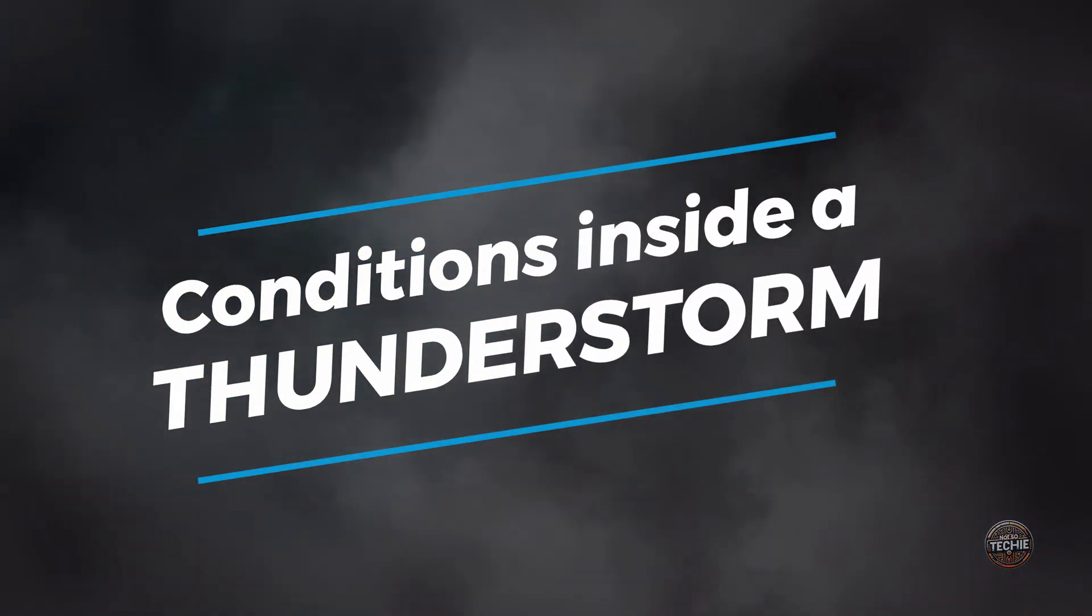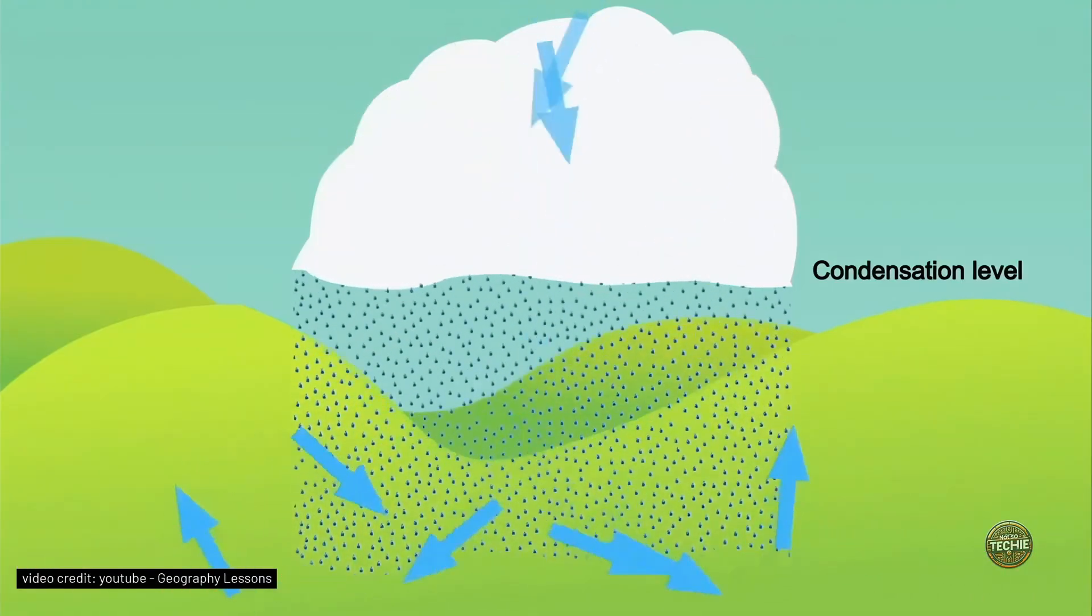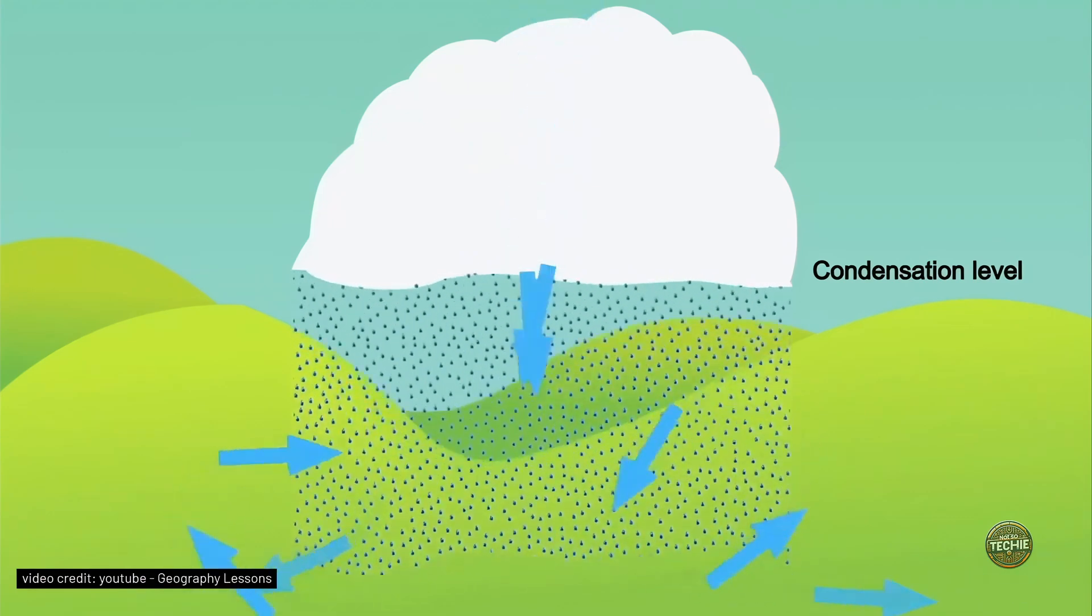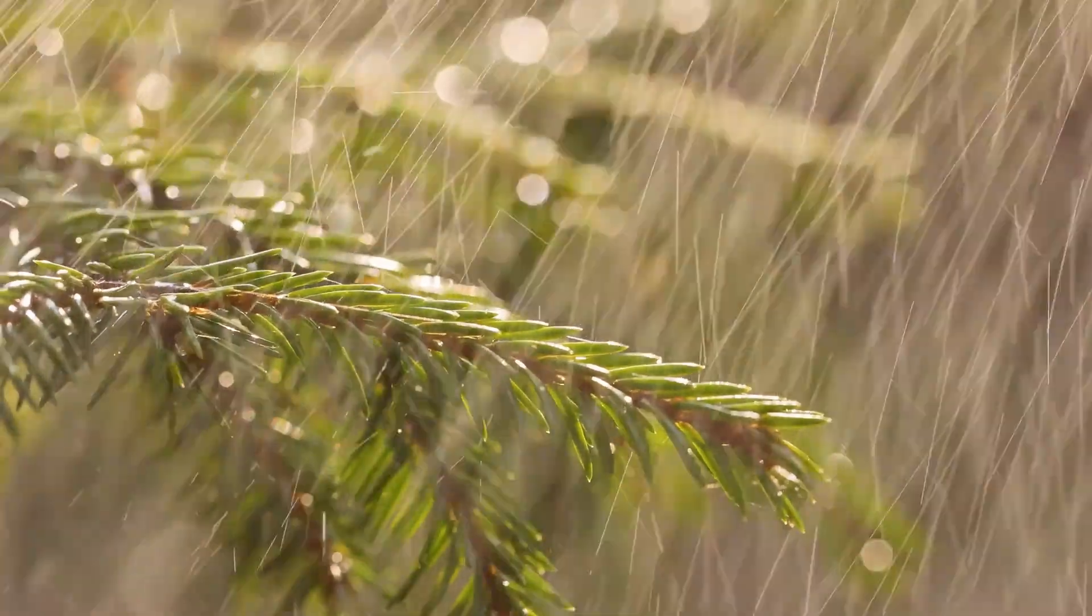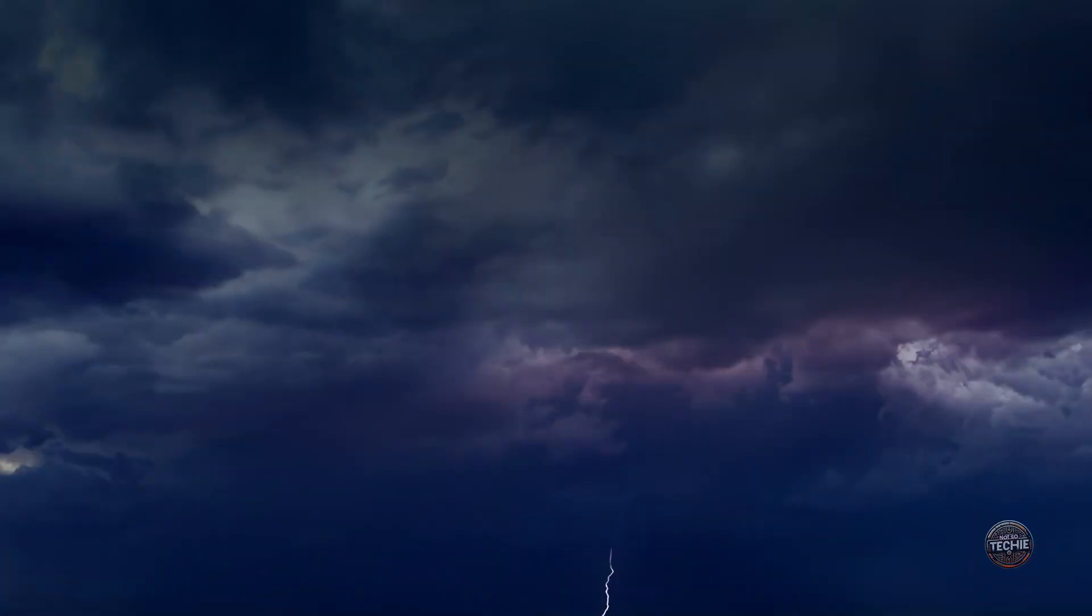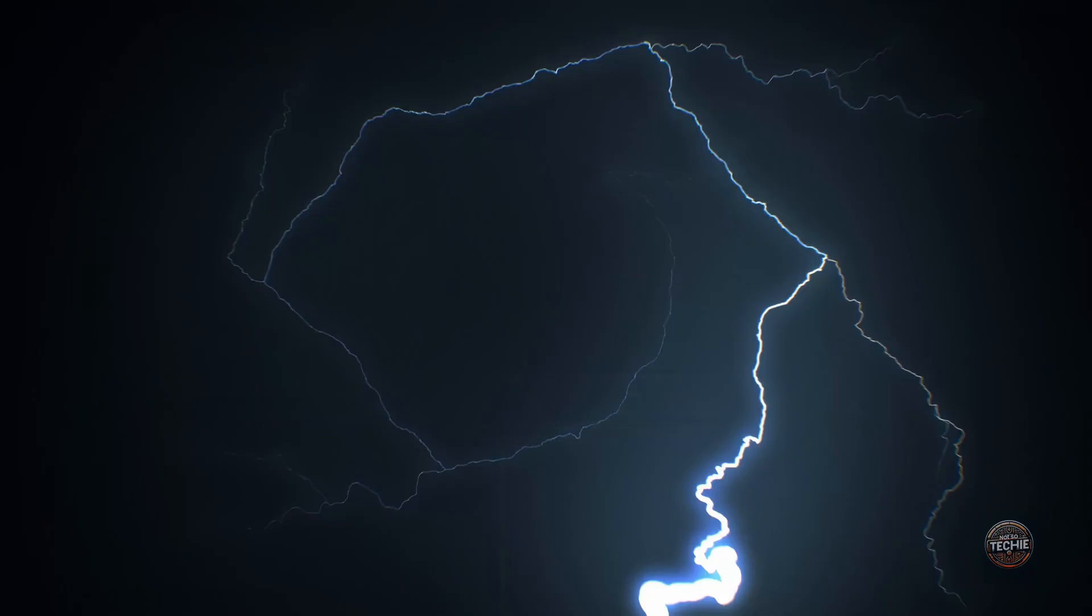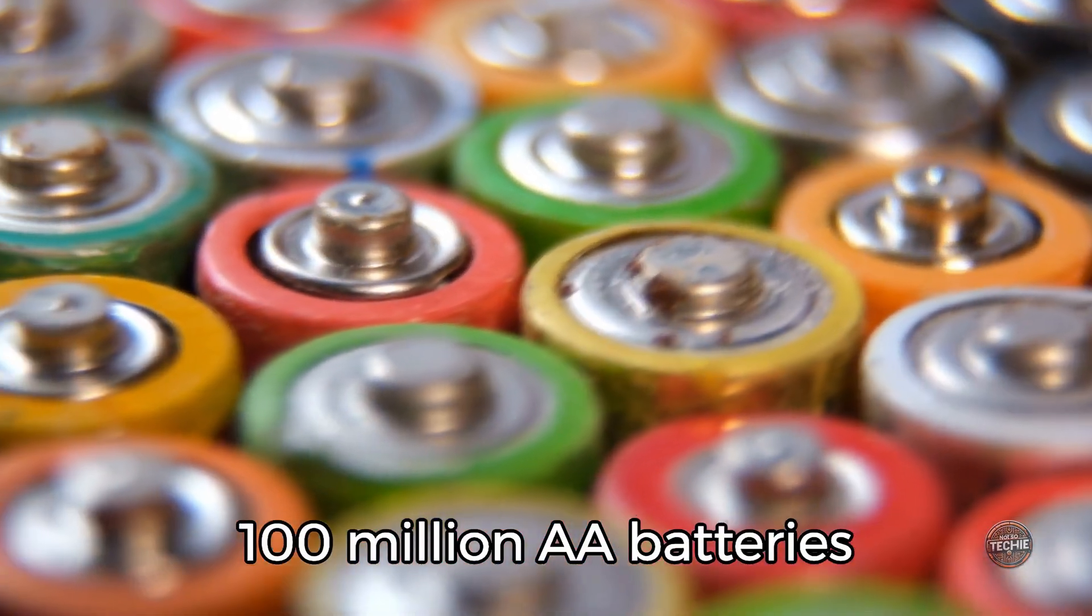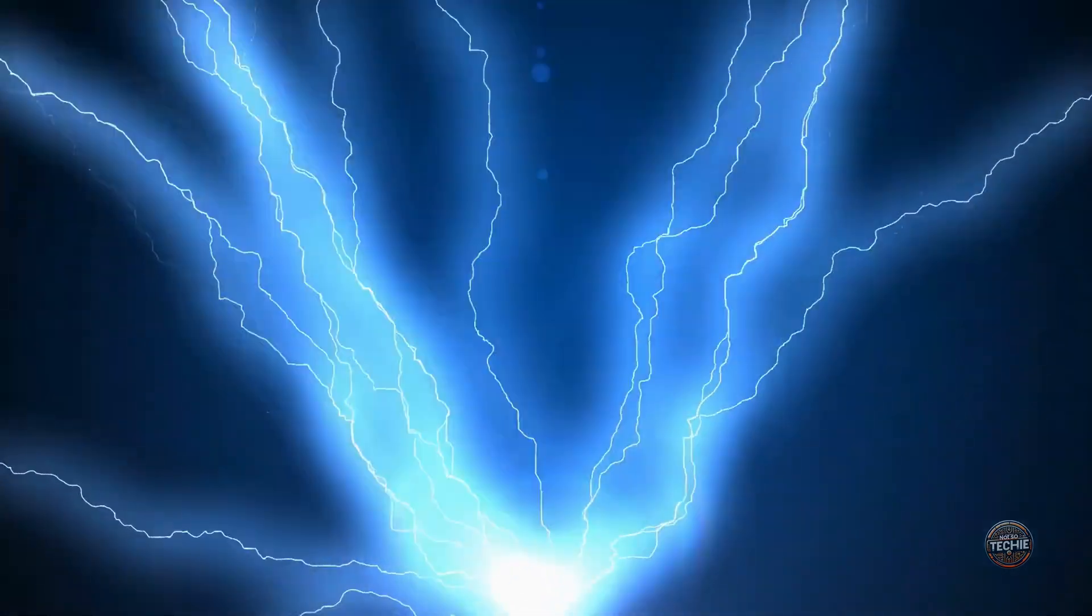Let's start by diving into the conditions inside a thunderstorm. These aren't just chaotic clouds of rain and lightning. They're dynamic systems brimming with energy. Inside a storm, updrafts of warm air collide with colder downdrafts. This creates turbulence, driving water droplets, hailstones, and ice crystals into constant motion. These collisions generate friction, which separates electrical charges within the storm. Positive charges accumulate at the top of the cloud, while negative charges gather at the bottom. This charge separation generates an electric field so powerful that it can reach millions of volts, comparable to the output of 100 million AA batteries. When this electric field intensifies, it creates the perfect environment for producing gamma rays.